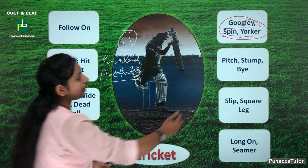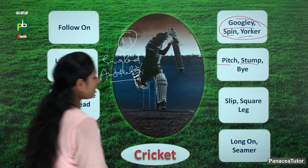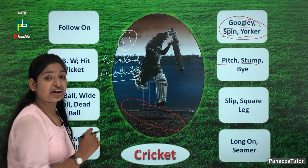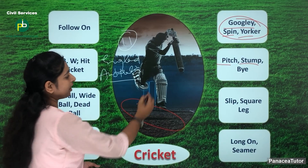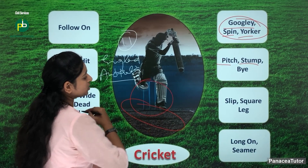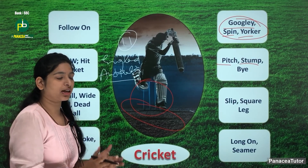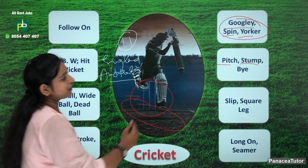Besides, there is the pitch and stump. What is the pitch? The ground where cricket is played is called the pitch. And stump — the next batsman is standing and protects the stump. That is your stump.